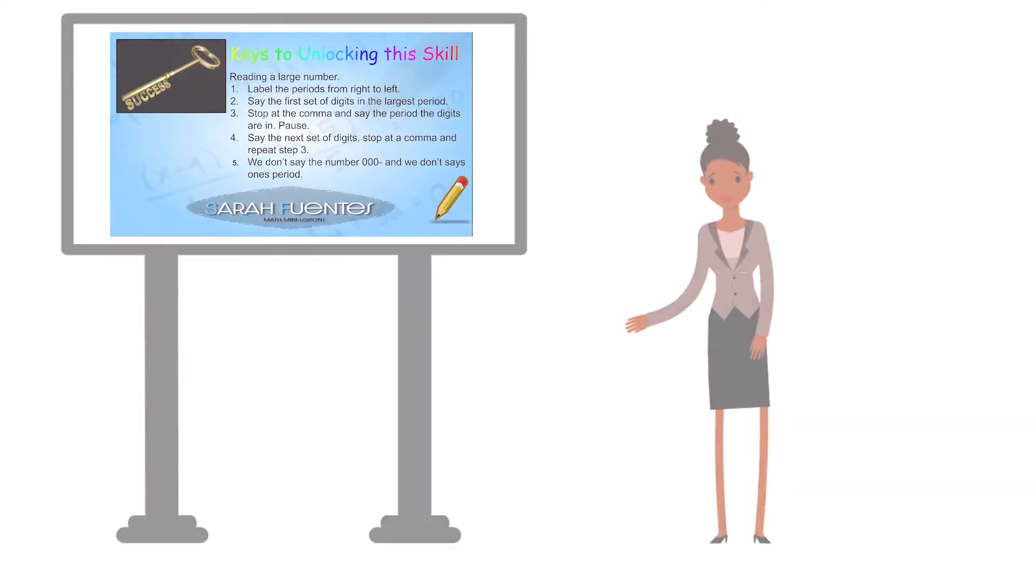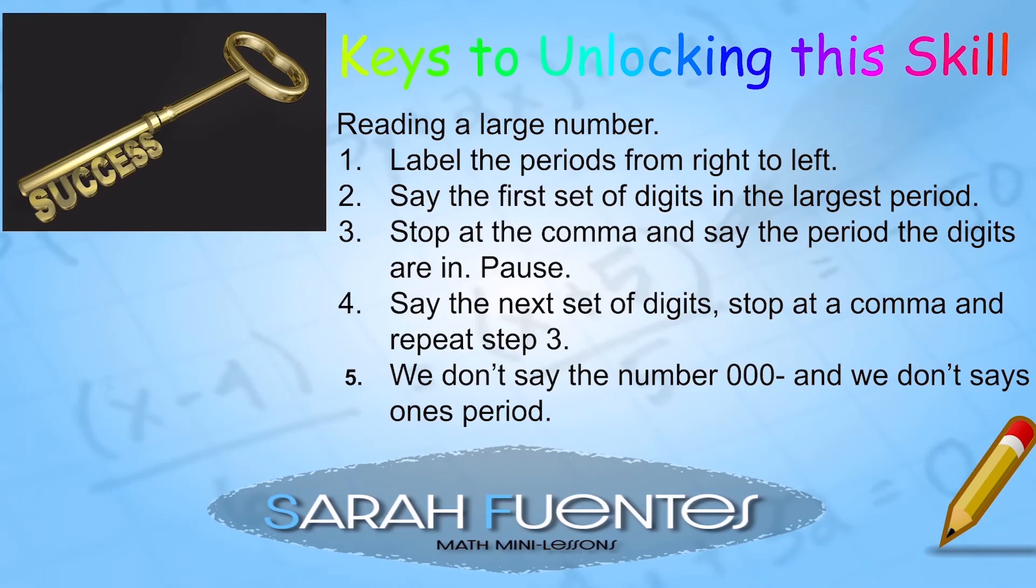These are the steps for reading a large number. One: we're going to label the periods from right to left, meaning start with the smallest numbers first—ones—and then label towards the left of the bigger ones. Two: we're going to say the first set of digits in the largest period. That means we're going to start from the left and say those numbers in that period, their first name. Step three: we're going to stop at the comma and say the period the digits are in. So if I have 97 and a comma, I say 97 and the period it's in—let's say it's millions—and then I slightly pause.